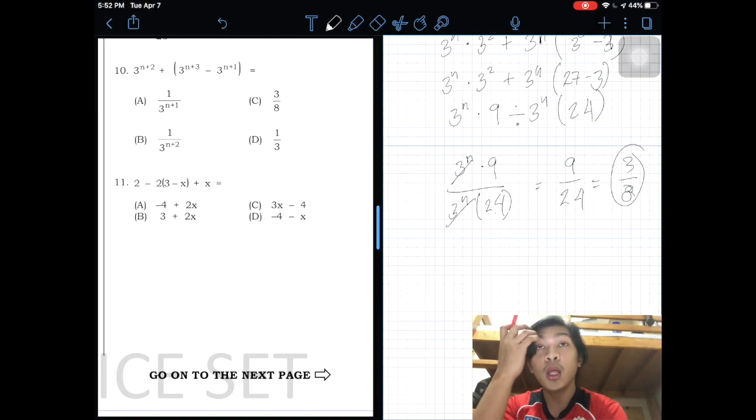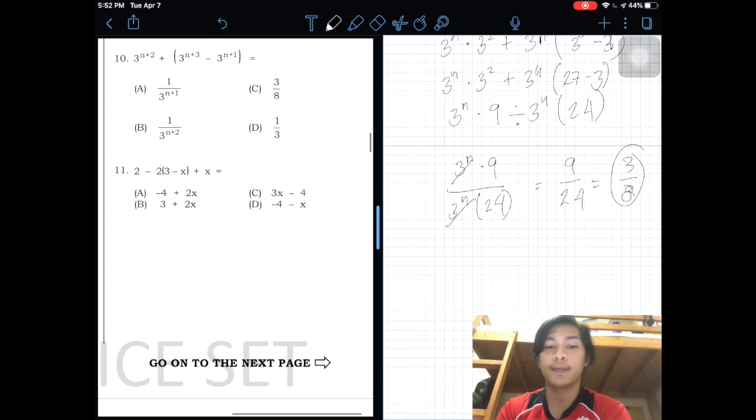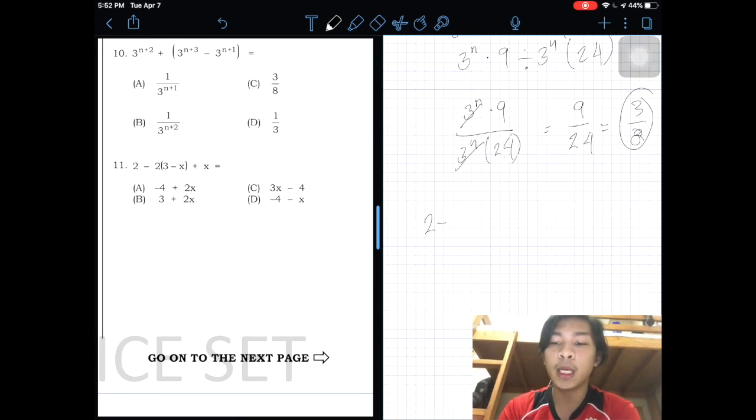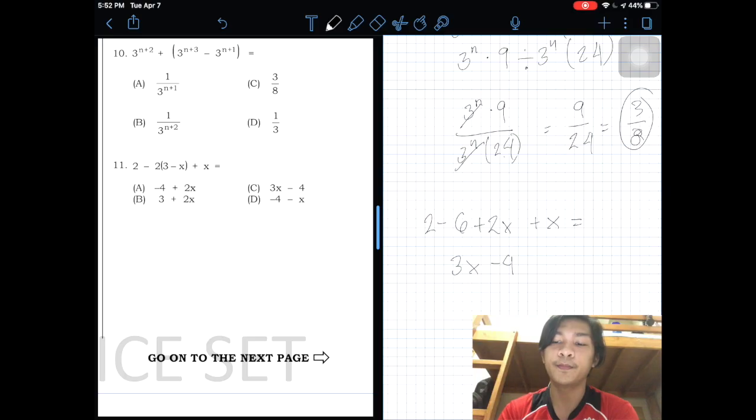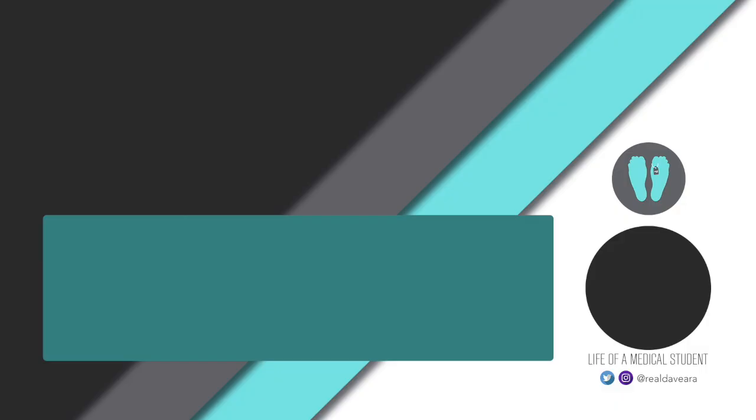Number 11. Another easy problem, which is 2 minus 6 plus 2x plus x. This will be just 3x minus 4. Number 11 is C.